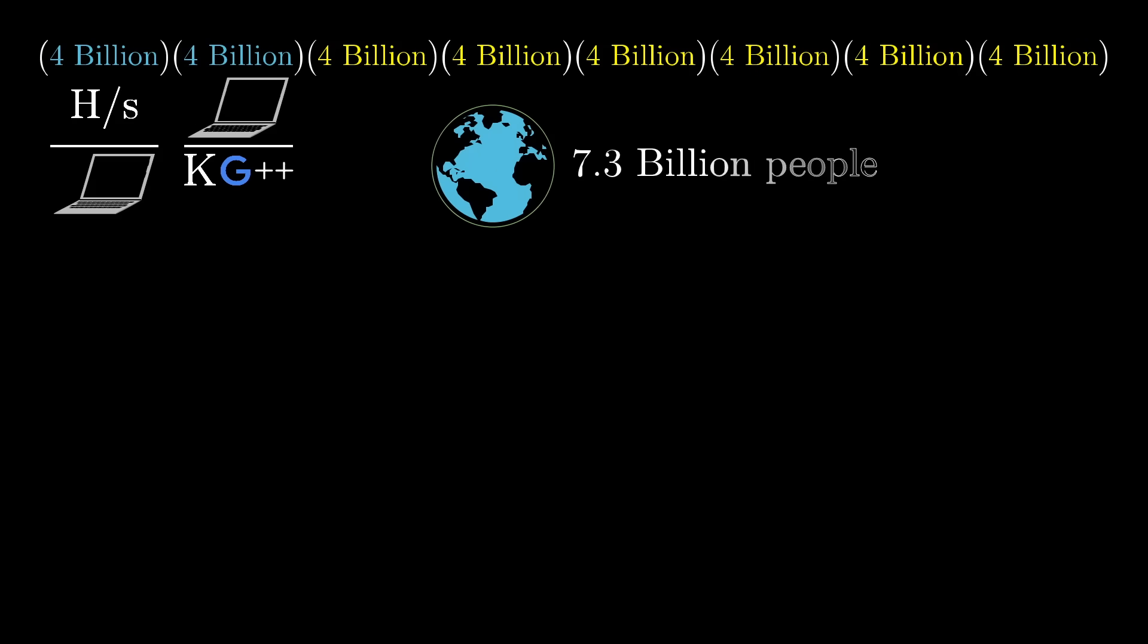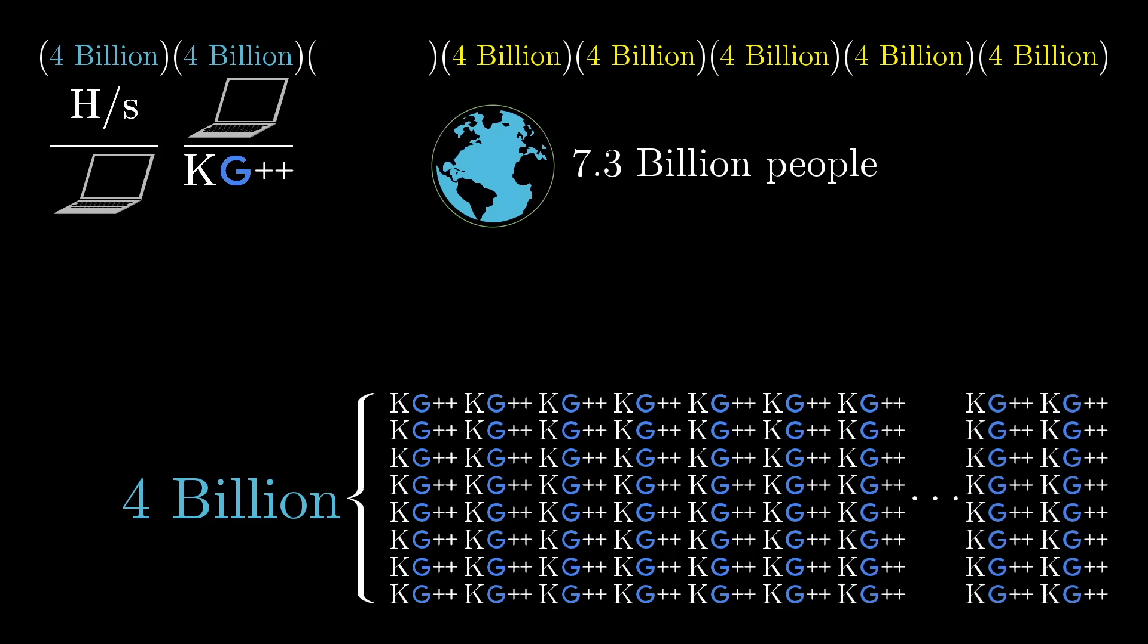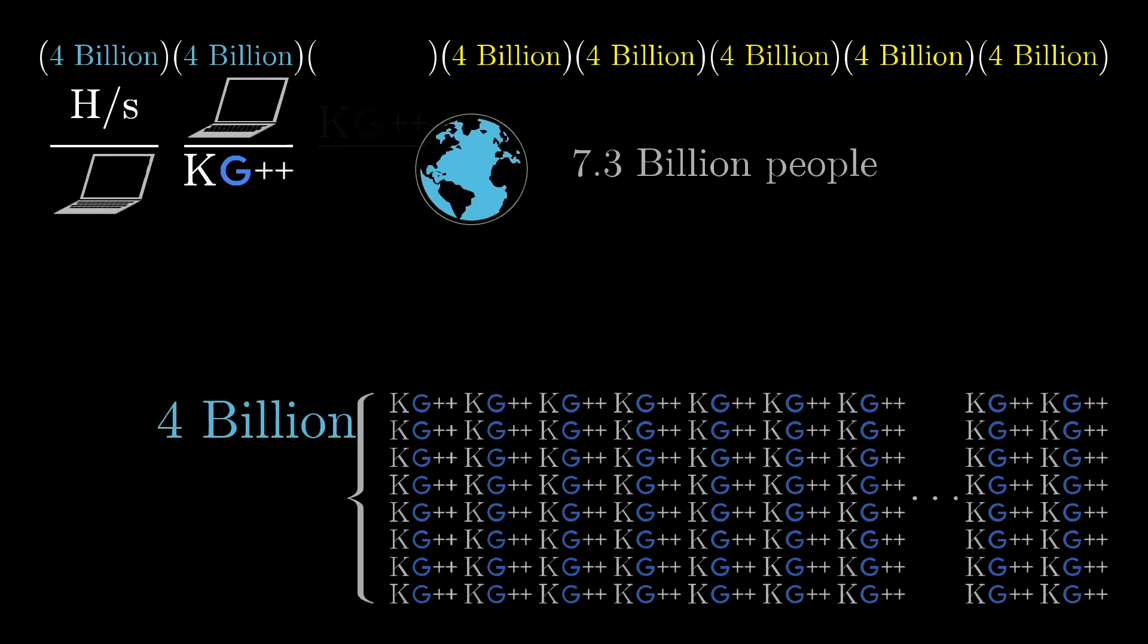There's about 7.3 billion people on Earth. So next, imagine giving a little over half of every individual on Earth their own personal kilogougle.